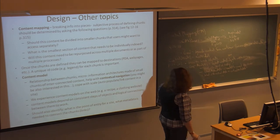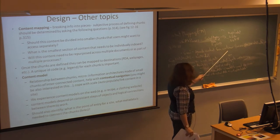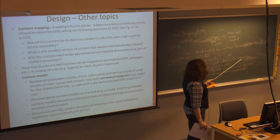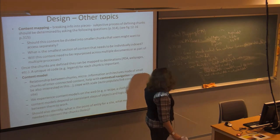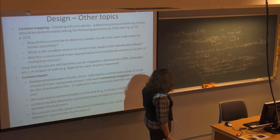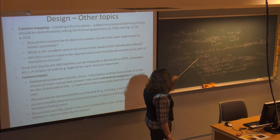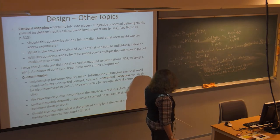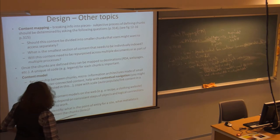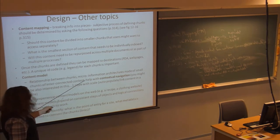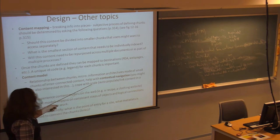The goal of the content mapping process is separation of content from the container, which allows you to use information in different places on the website without it being tied to just one place. The content model you develop is sort of a micro information architecture — it's the relationship between the chunks, made of small interconnected pieces of content that help with contextual navigation.